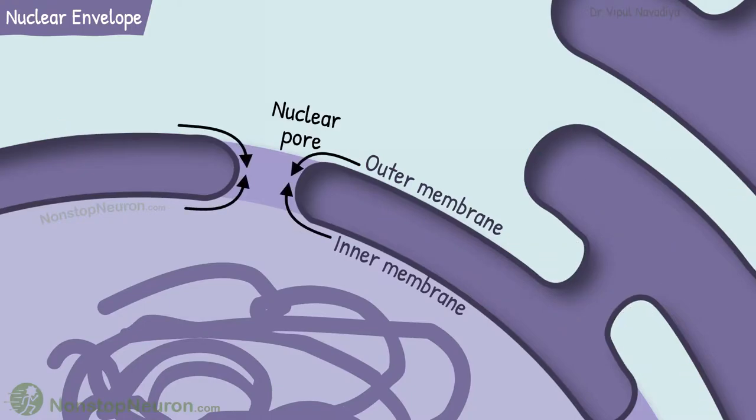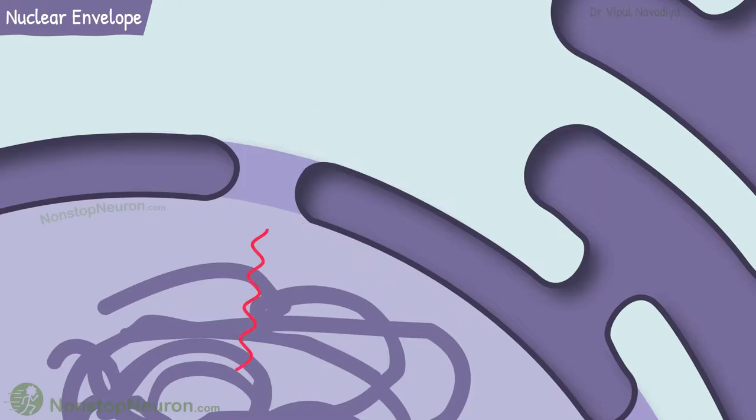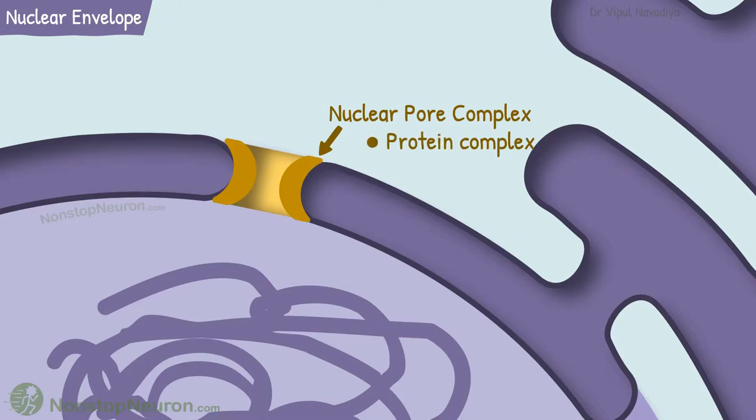The inner and outer membrane meets at nuclear pores. The pores provide a pathway between cytoplasm and the nuclear interior. This is the path for RNAs to exit and for signal molecules to enter the nucleus. These pores are lined by nuclear pore complexes. They are complexes of proteins.